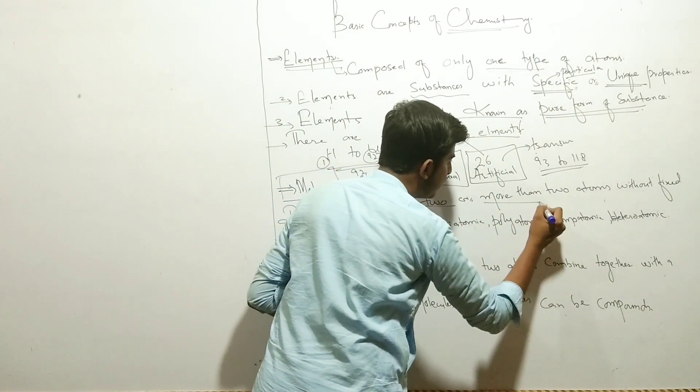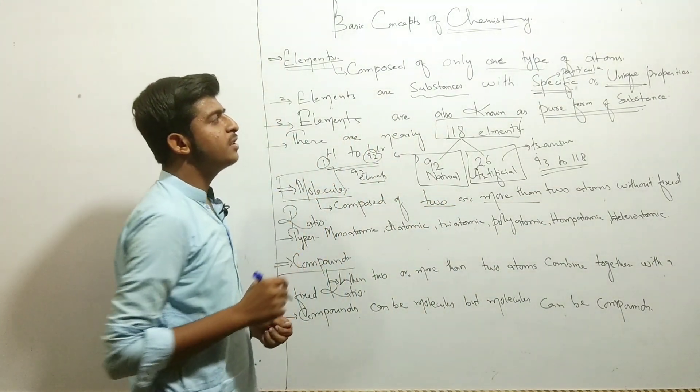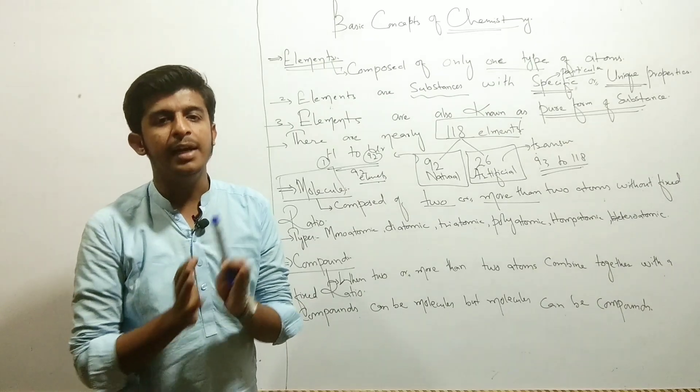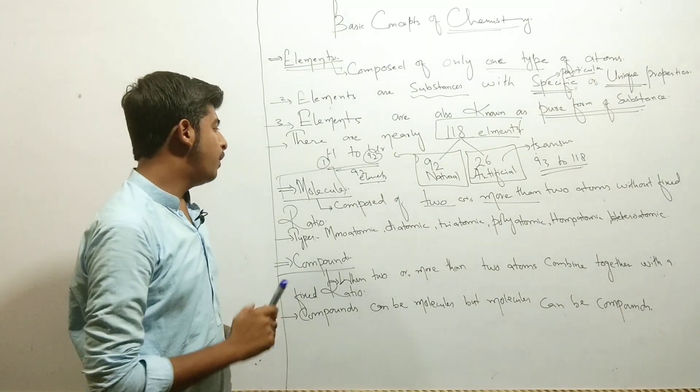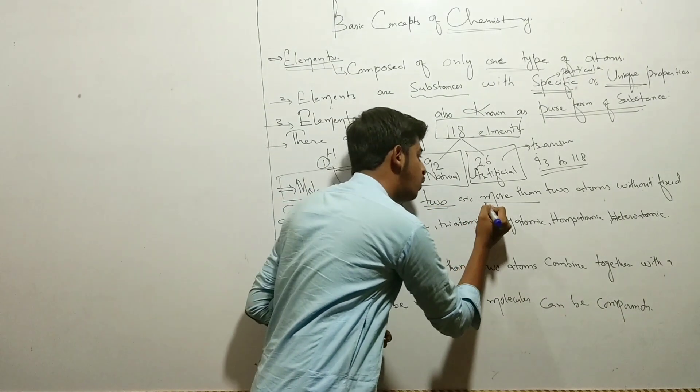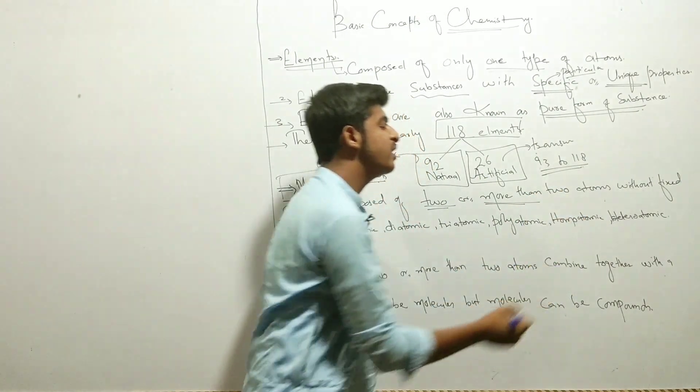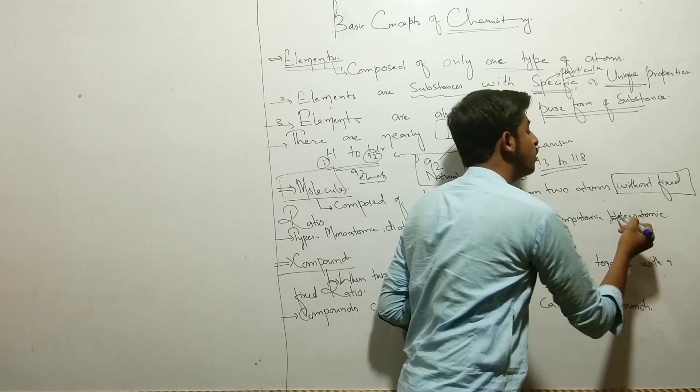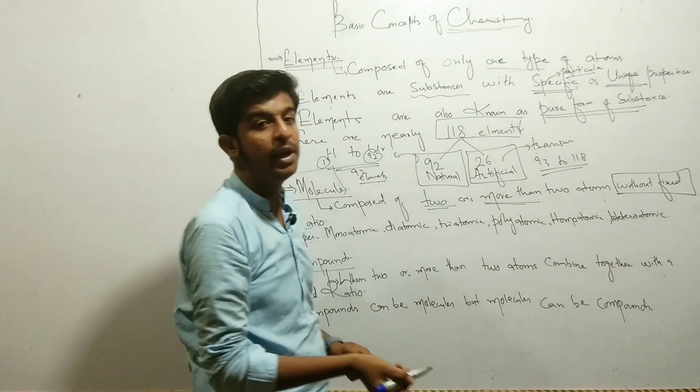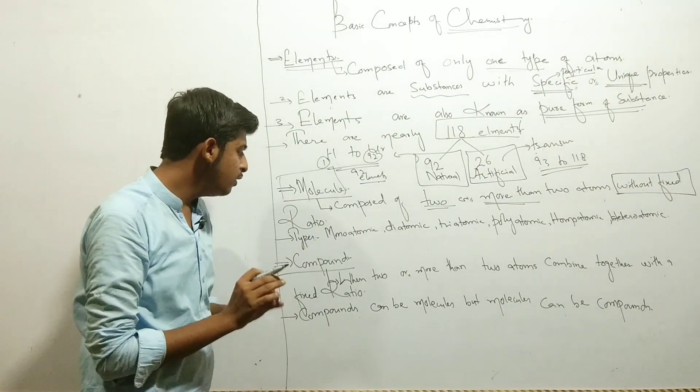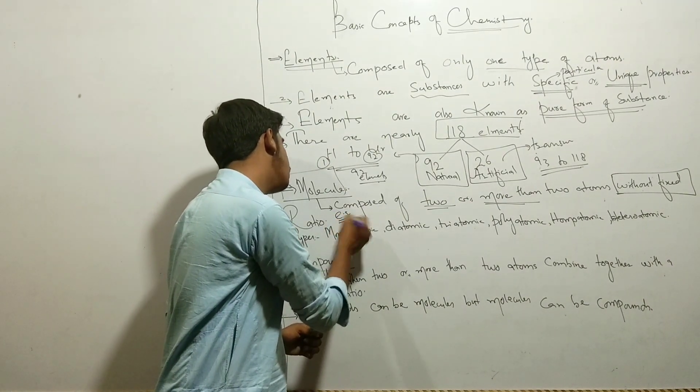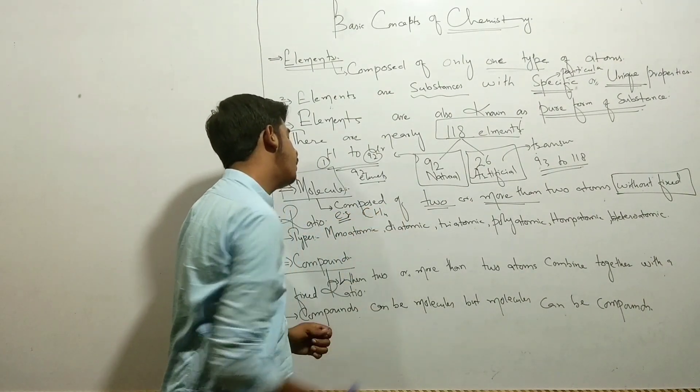Now we come to molecules. Molecules are composed of two or more than two atoms. The atoms in molecules have a fixed ratio. It's about fixed ratio. Suppose we have a molecule, the atoms inside the molecule have a fixed ratio.